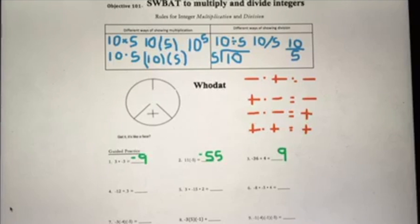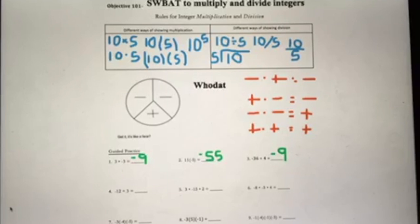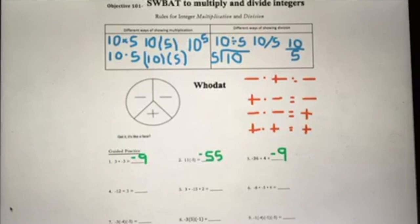Number three: 36 divided by 4 is 9, but the actual problem is negative 36 divided by 4. We have a negative and a positive involved, so our final answer is negative 9. Looking at number four: negative 12 divided by 3. Focus just on the numbers — 12 divided by 3 is 4. But it's negative 12 divided by 3, so your final answer is negative 4.